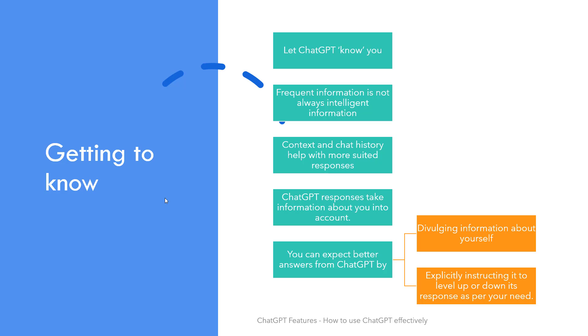In unsupervised learning, frequency of occurrence has a direct say in prioritization of content used in response to related questions. There are a couple of ways to get around this problem.